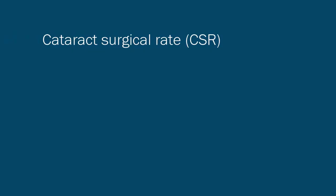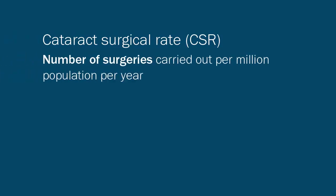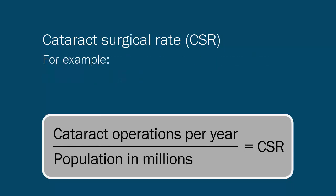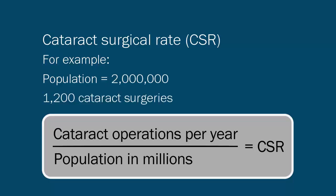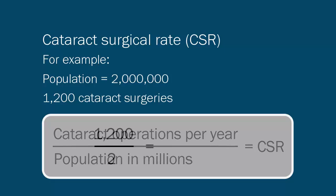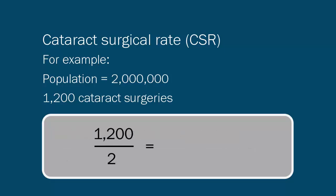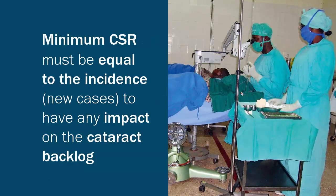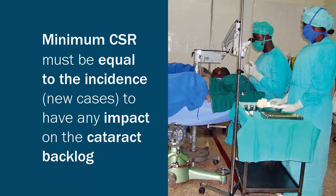Cataract surgical rate refers to the number of surgeries carried out per million population per year. To calculate it, we divide the number of cataract operations carried out in a year by the population in millions. For example, in a population of two million people where 1,200 cataract surgeries were carried out last year, the cataract surgical rate would be 1,200 divided by two, giving us a rate of 600 operations per million population. The minimum cataract surgical rate needs to be equal to the incidence of new cases for it to begin to have any impact on the cataract backlog.